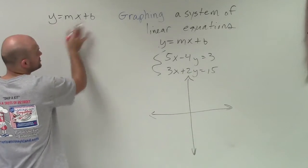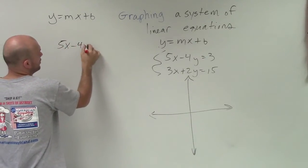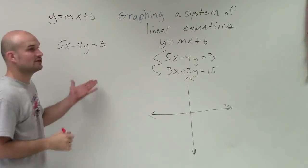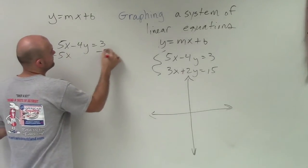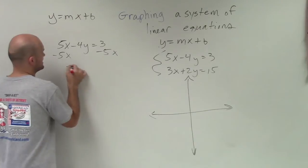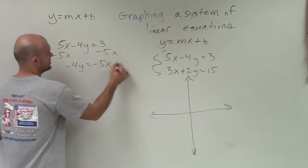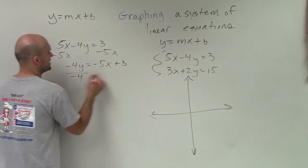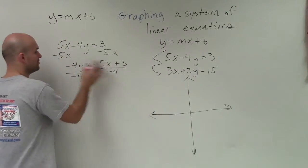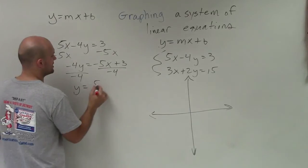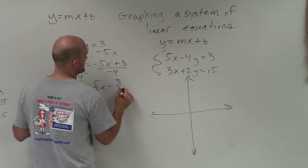The first way is you convert to slope-intercept form. So for 5x minus 4y equals 3, I need to isolate my y variable. I'll subtract 5x on both sides and get negative 4y equals negative 5x plus 3. Then I'll divide by negative 4, making sure to divide into both terms. You get y equals positive 5 fourths x minus 3 fourths.